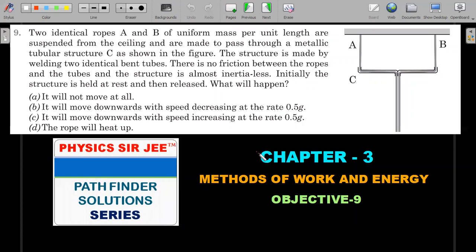So here we go: Two identical ropes A and B of uniform mass per unit length are suspended from the ceiling and are made to pass through a metallic tubular structure C as shown in the figure. The structure is made by welding two identical bent tubes. There is no friction between the ropes and the tubes, and the structure is almost inertialess. Initially the structure is held at rest and then released. What will happen? He's talking about the structure, so 'it' here means structure.